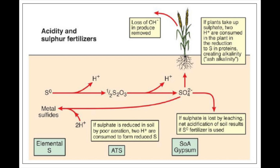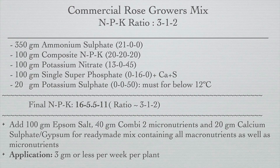In my previous video I discussed that commercial rose growers use the NPK ratio 3:1:2 for commercial rose growing, which is also true for other roses. For optimum flowering we should maintain this ratio. I also discussed that phosphorus is required in very small amounts by rose plants based on tissue culture studies — I will provide a link to that video.